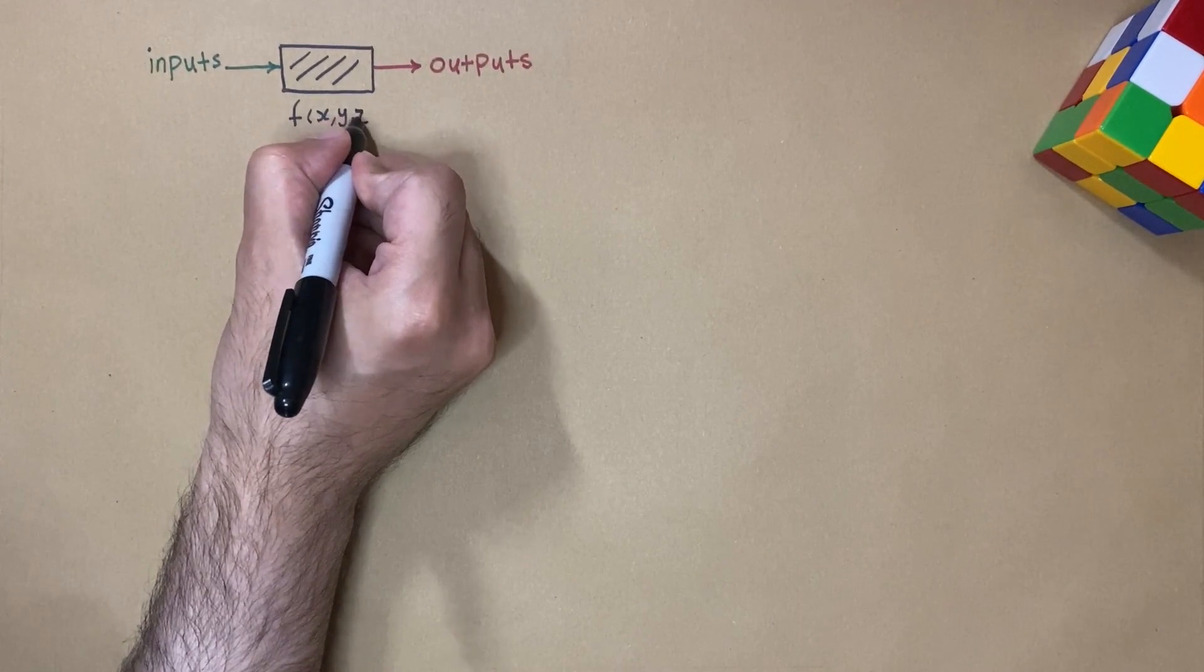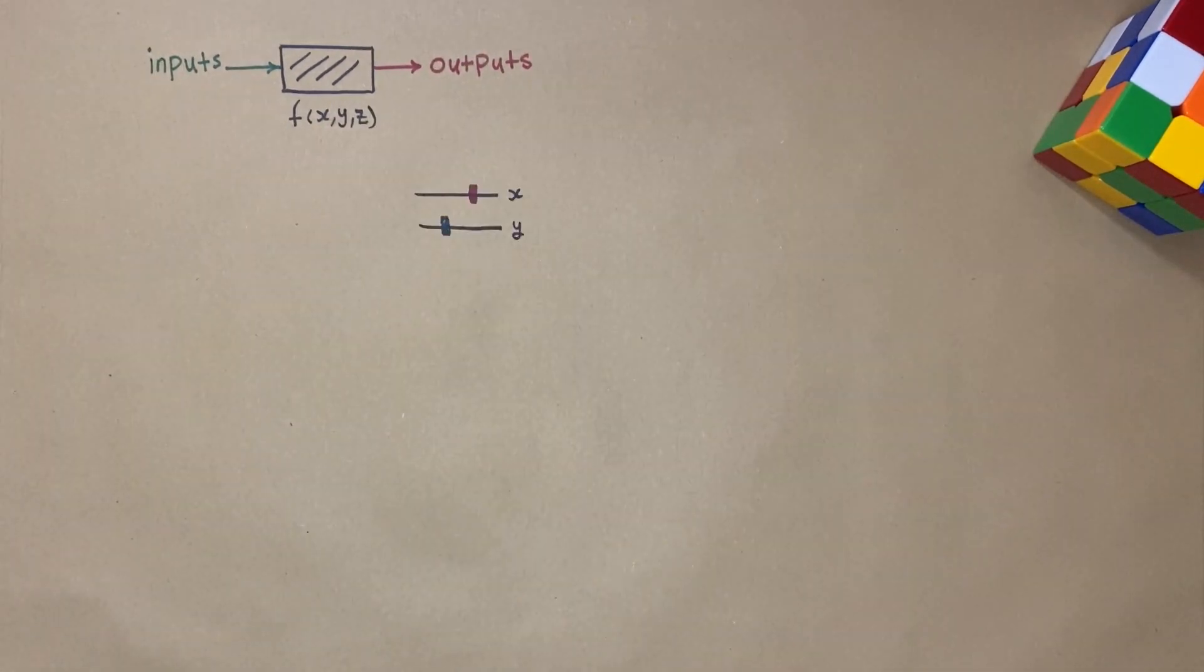So let's assume that this black box is any machine learning algorithm out there, that it has some inputs, data, and some outputs, which are whatever we want to predict or classify. You can think of this black box as a function with some parameters in it, like x, y, z.